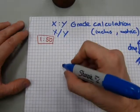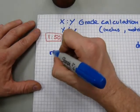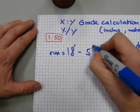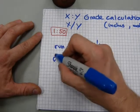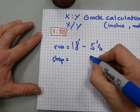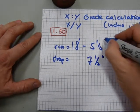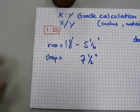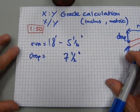For example, we have a run of, I don't know, 18 feet. I'm just going to write run equals 18 feet, 5 inches and a quarter. How about that one? And we measure the drop with a tape measure. And it checks out to be 7 and a half inches. So now we need to know whether indeed if this is a 1 over 50 grade or what the heck have we built. And this is how it's done.